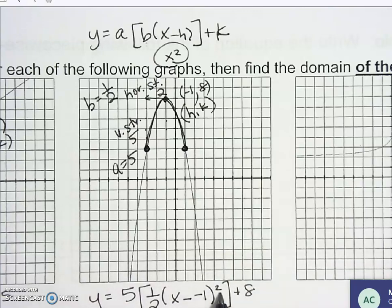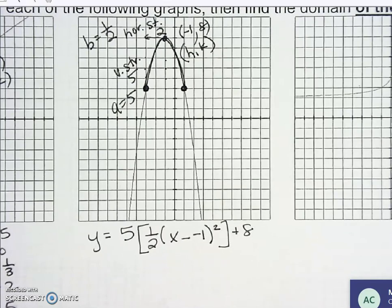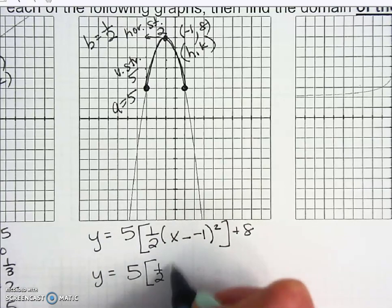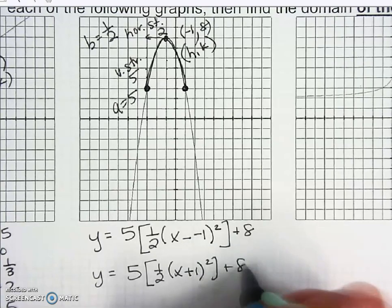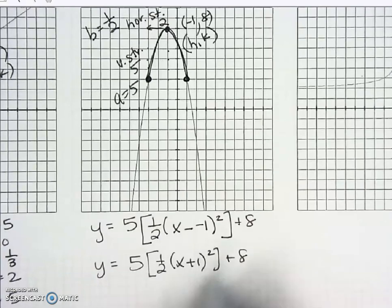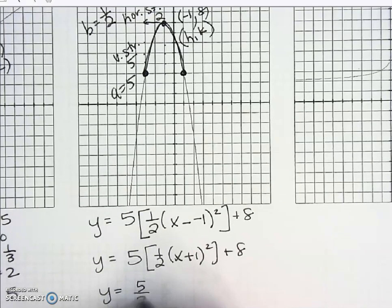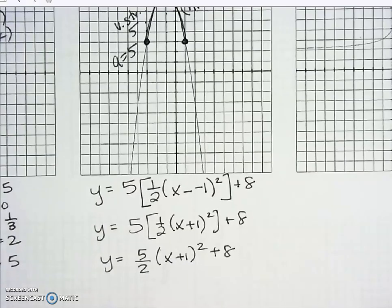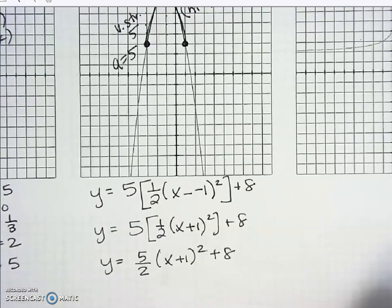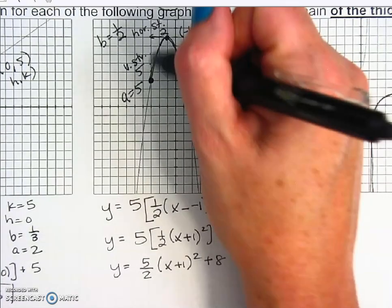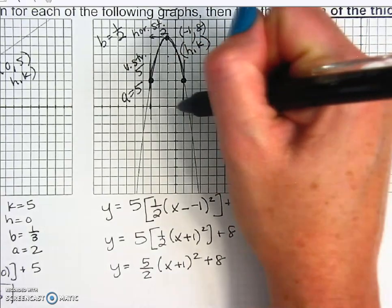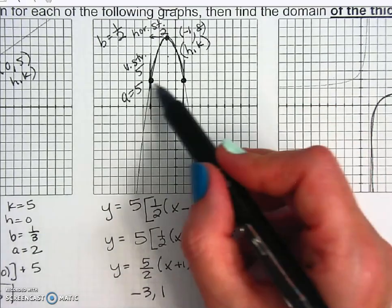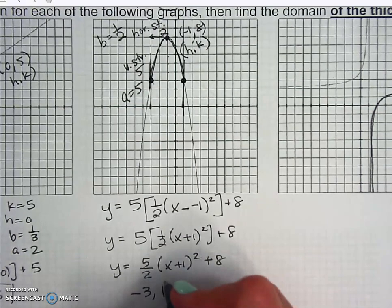We square the parentheses because it's a quadratic. Minus negative one becomes plus one. You can leave the equation in this form, or multiply five by one-half to simplify. The domain restriction is from the left boundary at negative three to the right boundary at one — both have solid shaded circles, so both endpoints get brackets.